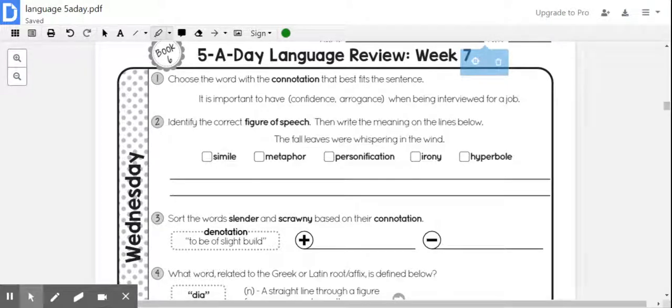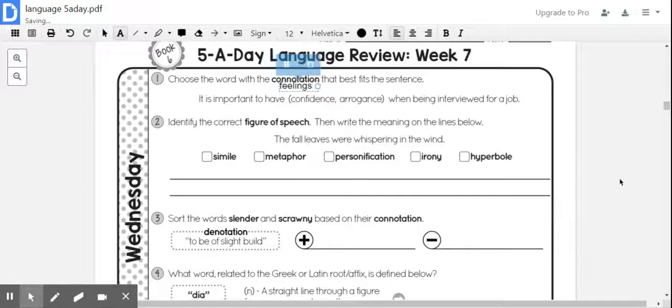All right, we're going to continue with language review. We are on Wednesday, week seven. Number one, it says choose a word with a connotation that best fits the sentence.